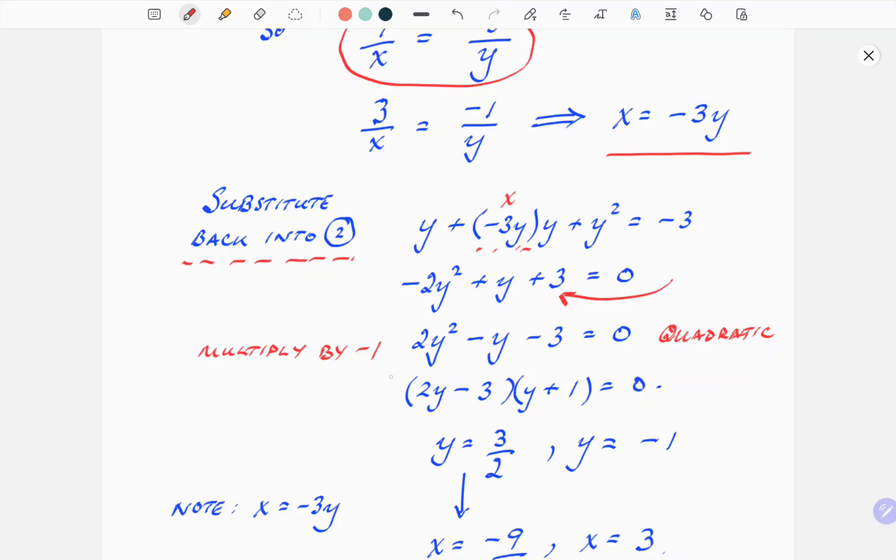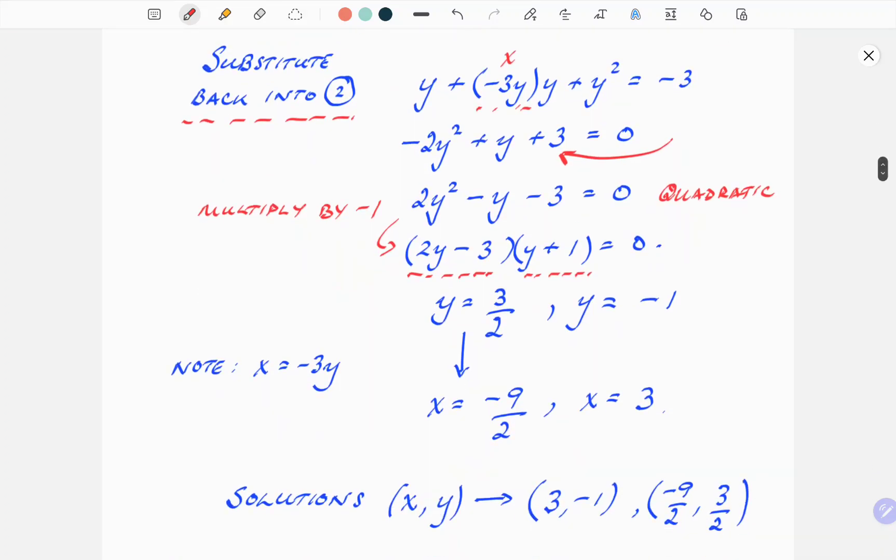Factorizing the quadratic, we have two factors: 2y minus 3 and y plus 1 equals 0. Now, obviously, we know that one of those must be 0 at any given time for that statement to be true, for that equation to equal 0. So, taking the solutions from there, standard quadratic factorization, y has a solution of 3 over 2. Just to explain, we have 2y minus 3 equals 0, so y must equal 3 over 2. Likewise, for y plus 1 equals 0, y must equal minus 1. So we have those solutions there.